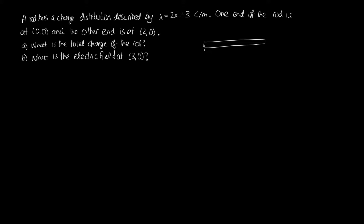To start this problem, let's draw a diagram. We've got a rod with one end at x equals zero and the other end at x equals two, and we're particularly interested in the electric field at the point x equals three.